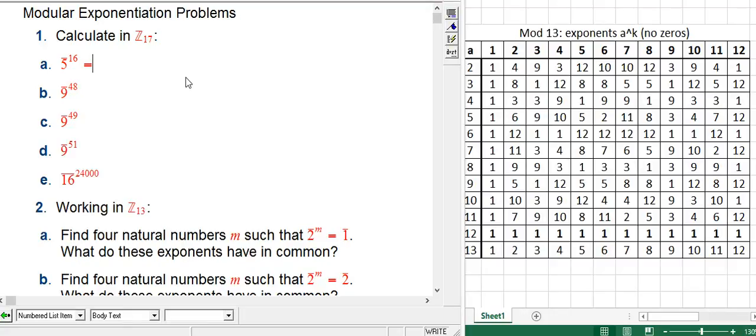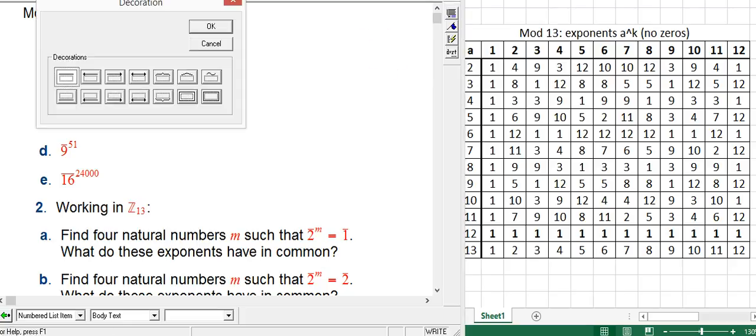That'd be maybe a little better, but still laborious. But the great thing is that Little Fermat says, hey, 17 is prime. 16 is 1 minus 17. This is equal to 1, or I'll write it as 1 bar.